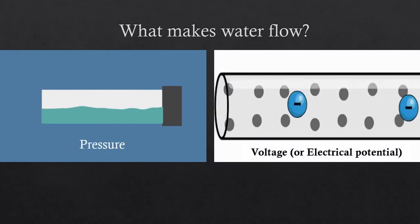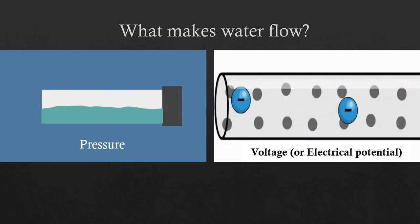And same for electrons to flow, it's because of voltage, or another name is electrical potential.